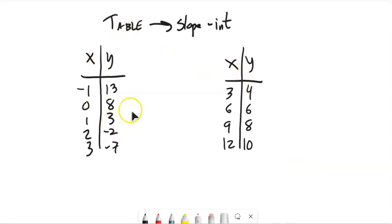Today we're going to talk about how to look at a table that's linear, that graphs to a straight line, and then write an equation for it in slope-intercept form.